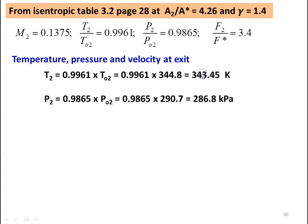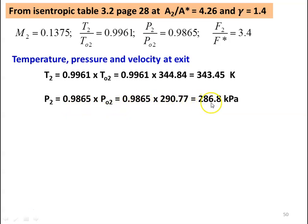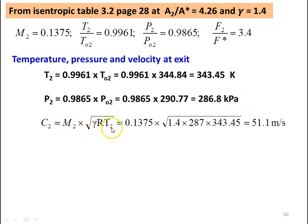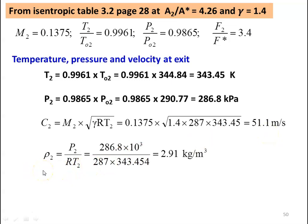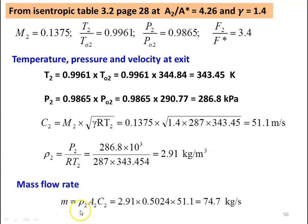Pressure, temperature, and velocity at the exit: T2 equal to 0.9961 into 344.84, equal to 343.45 Kelvin. P2 equal to 0.9865 into 290.77, equal to 286.8 kilo Pascal. C2 equal to M2 into square root of gamma R T2, which is 0.1375 into square root of 1.4 into 287 into 343.45, equal to 51.1 meters per second. Density at the exit: rho2 equal to P2 by R T2, which is 286.8 into 10 power 3 divided by 287 into 343.45, equal to 2.91 kilograms per meter cube. Mass flow rate: M equal to rho2 A2 C2, which is 2.91 into 0.5024 into 51.1, equal to 74.7 kilograms per second.